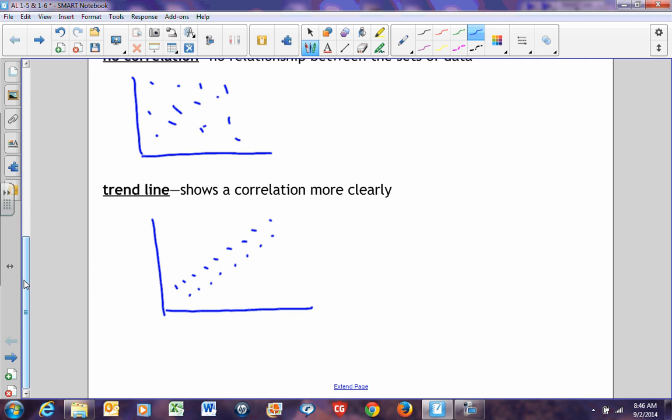When you draw a trend line, as much as possible, you'd like to have the same number of points above and below your trend line. Now, it doesn't always work perfectly that way. But it's always helpful that you can have approximately the same number of points above and below.